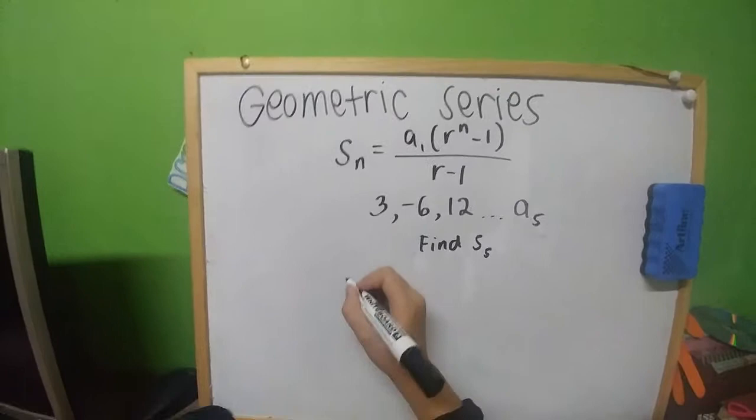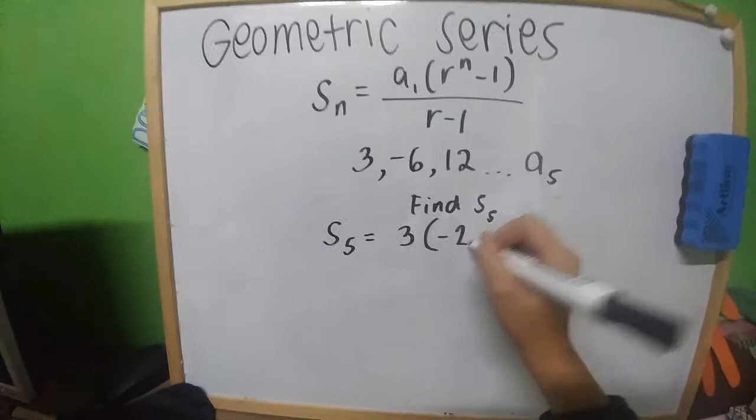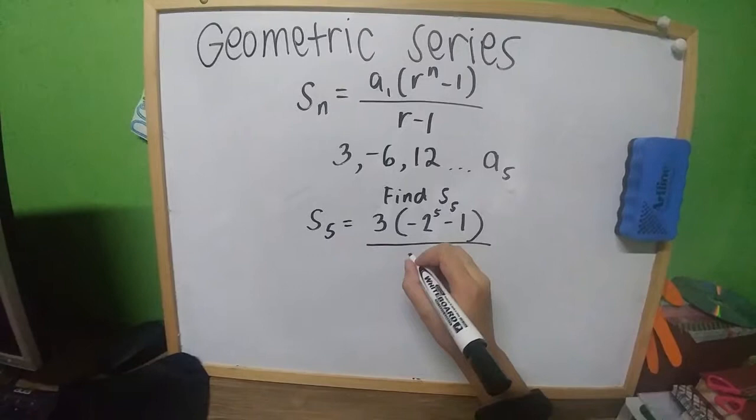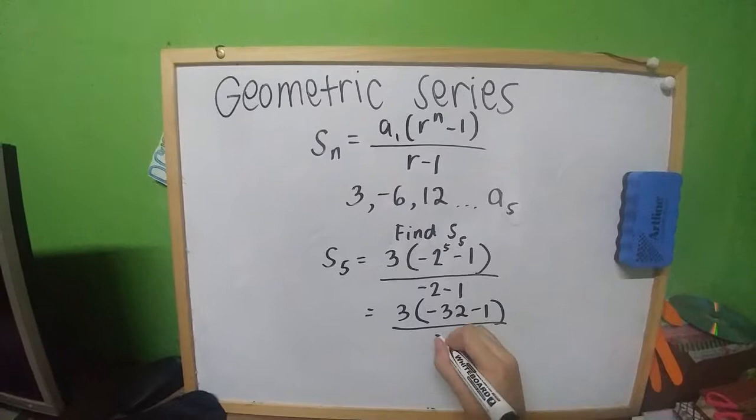S sub 5 equals 3 multiplied by negative 2 raised to 5 minus 1, all over negative 2 minus 1. 3 times negative 32 minus 1, all over negative 3. 3 times negative 33.